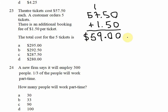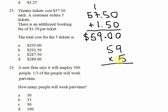1 + 7 = 8, plus 1 = 9; carry down the 5. So the total cost for one ticket is $59.00. If one ticket costs $59 then 5 tickets cost 5 × $59. 5 × 9 = 45, carry 4; 5 × 5 = 25, plus 4 = 29. Therefore the cost for 5 tickets is $295.00, which is option A.